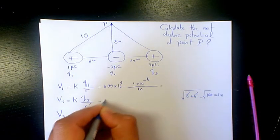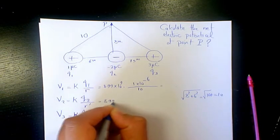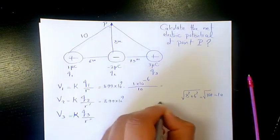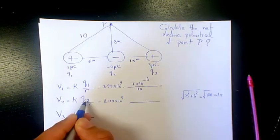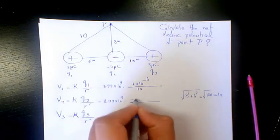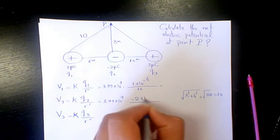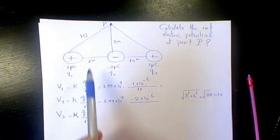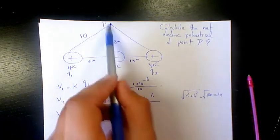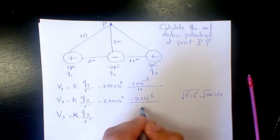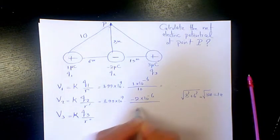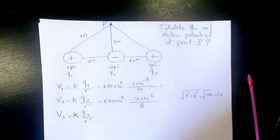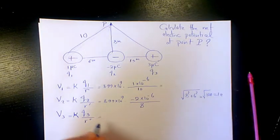Here is 8.99 times 10 to the power of 9, times Q2 which is negative 2 times 10 to the power of negative 6, divided by R prime which is 8.